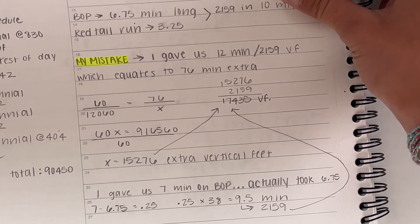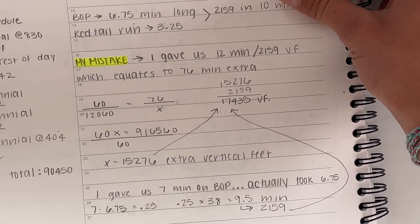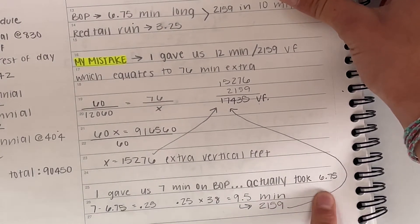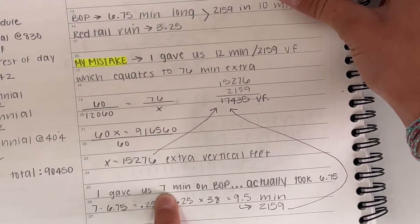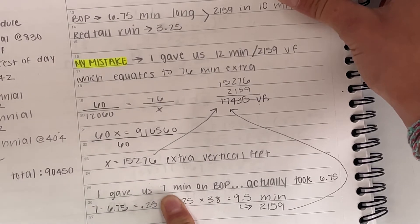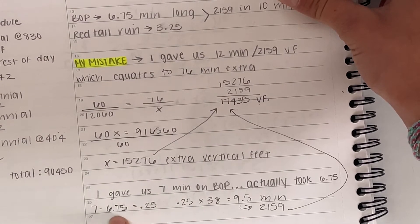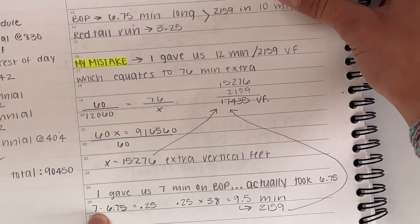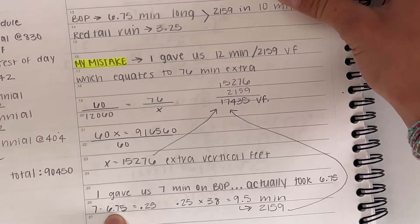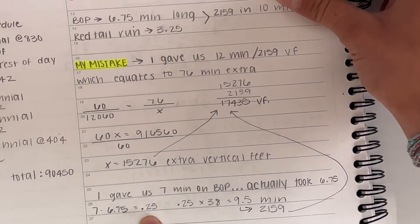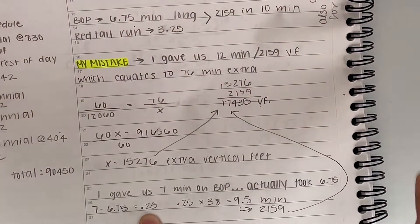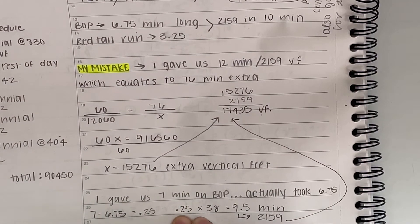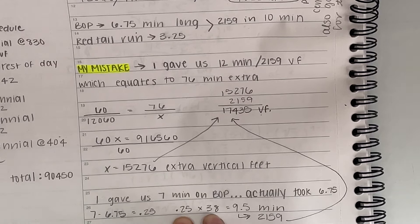So the lift is 6.75 minutes long. I estimated it would be seven minutes. So basically when you subtract seven minutes, which is what I thought it would take minus 6.75, that gives us an extra 0.25 minutes per 2,159 vertical feet. Then you multiply this 0.25 times 38, which is how many times you're on that lift.